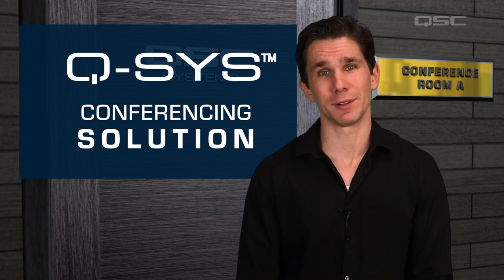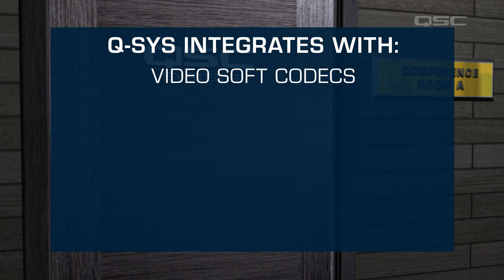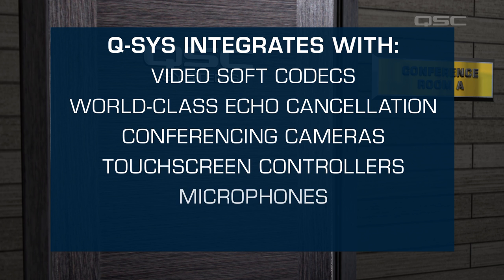Imagine if you could walk through these doors and with a few simple clicks start your remote meeting, taking full advantage of the room's conferencing technology and have it just work. With Q-SYS it really is that simple. The Q-SYS platform will connect to soft-coded applications, integrate with world-class echo cancellation, professional conferencing cameras, touchscreen controllers, microphones — you get the picture. And it does all of this with your installation's existing network hardware and standard IT protocols. You interested? Let's go inside.